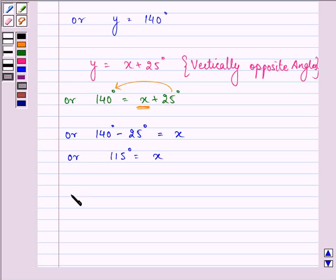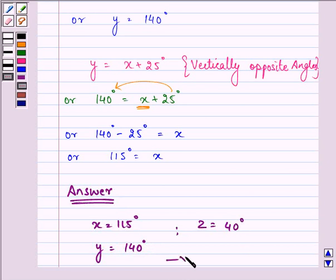So let me write down all the answers again. We have x as 115 degrees, y as 140 degrees, and z as 40 degrees. This completes the solution. Hope you understood the solution well and enjoyed it. Bye.